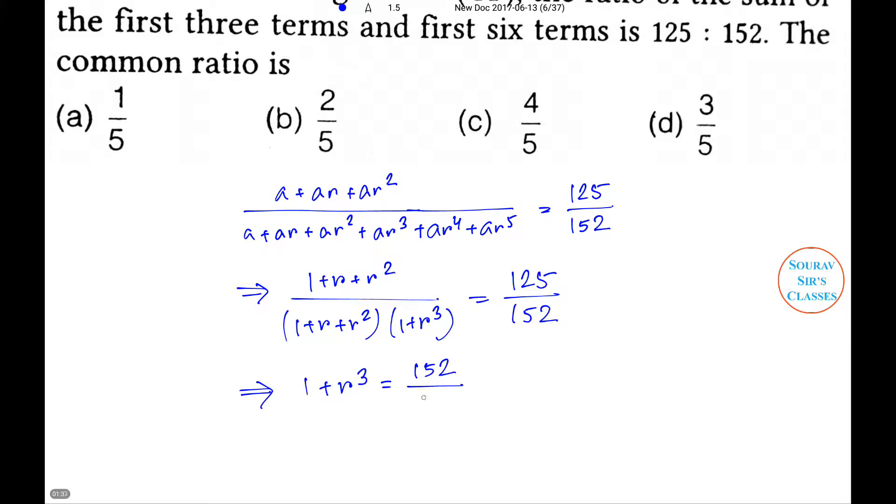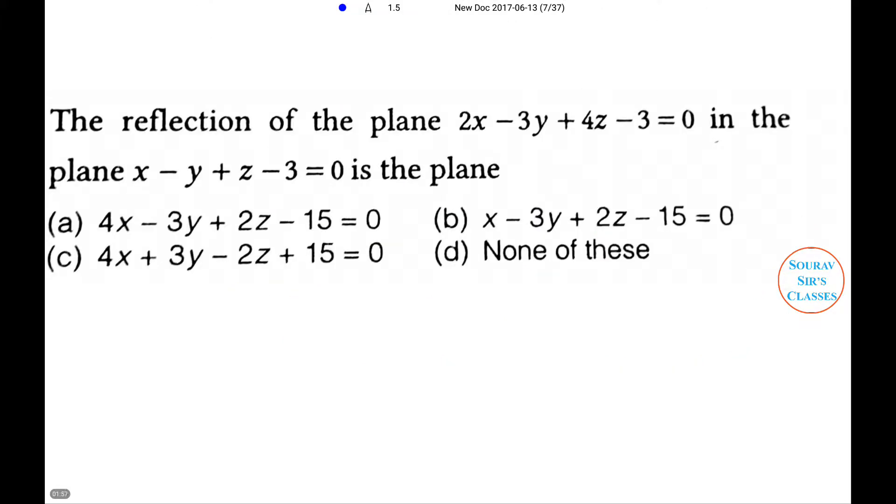So r cubed equals 27 by 125, that equals 3 by 5 whole cubed. So r equals 3 by 5. So option D will be the right answer.